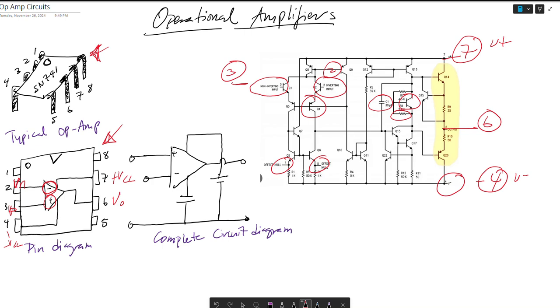In terms of the complete circuit diagram, this is pin 3, pin 2, pin 4 here connected to a negative power supply VCC. Remember this is the positive and this is the negative VCC. Here is pin 7 where this is the positive and this is the negative VCC. And this is pin 6 here. For pins 1, 5, and 8, don't worry too much about those when working with an operational amplifier.